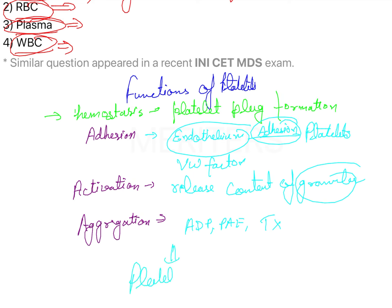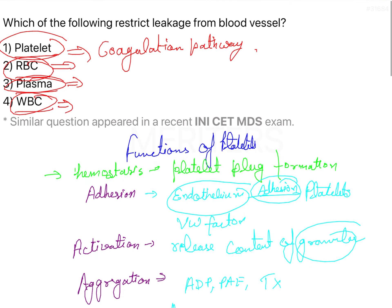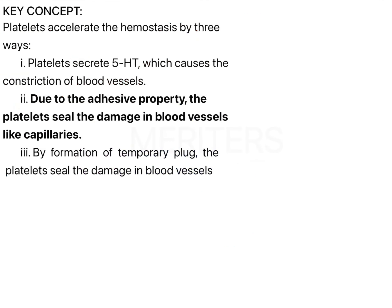This leads to formation of the platelet plug, which seals all the leakages of the vascular system. The vascular system is a closed and sterile system, so it has to remain closed. The platelets play the role in hemostasis. Quickly going through the key concept: platelets accelerate hemostasis by three ways.